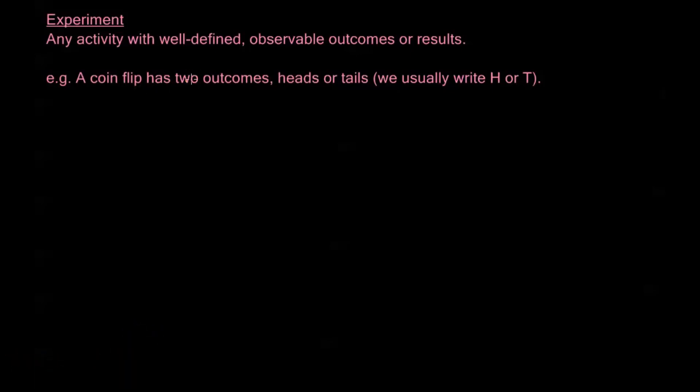So for example, a coin flip has two outcomes heads or tails and we usually write H or T, so a coin flip is just a very basic example of an experiment and it's one that we'll use pretty frequently in example problems because it's so easy to talk about.